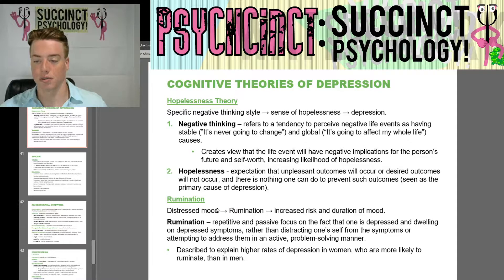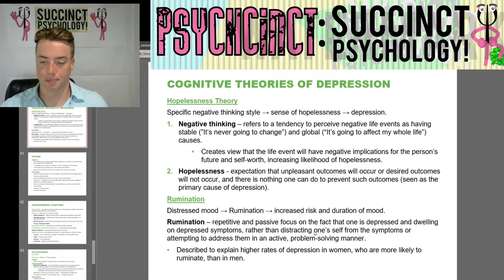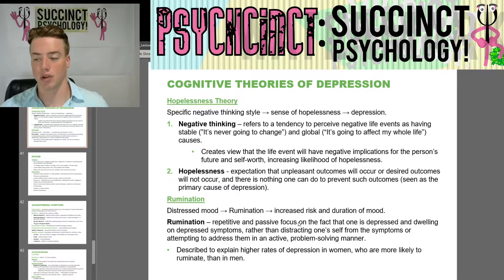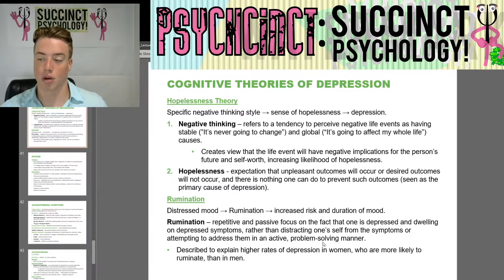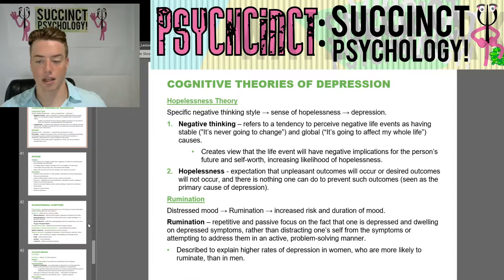We have rumination: distressed mood leads to rumination, which leads to an increased risk and duration of mood episodes. Rumination is the repetitive and passive focus on the fact that one is depressed and dwelling on depressed symptoms, rather than distracting oneself from the symptoms or attempting to address them in an active, problem-solving manner. It's described to explain higher rates of depression in women, who are more likely to ruminate than men.